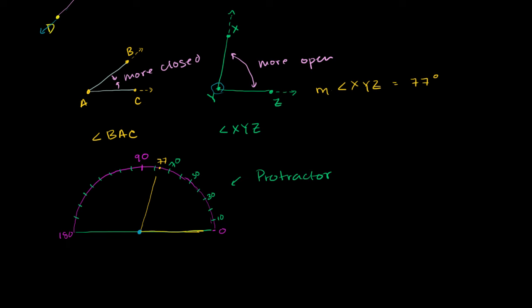So let's measure this other angle, angle BAC. I'll put A at the center, and then AC along the zero degree edge of this half circle, or protractor. And then I'll point AB in that direction — normally you could move the protractor to the angle. And you can see that it's pointing to right about the 30 degree mark. So we could say the measure of angle BAC is equal to 30 degrees.